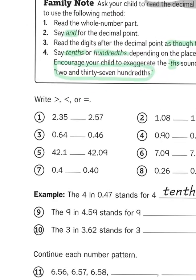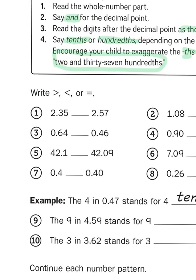By just saying them aloud, I start to hear some clues as to which one might be bigger. Two and thirty-five hundredths versus two and fifty-seven hundredths. Obviously, fifty is bigger than thirty, so I would say that this number is bigger. I would read this inequality as two and thirty-five hundredths is less than two and fifty-seven hundredths.